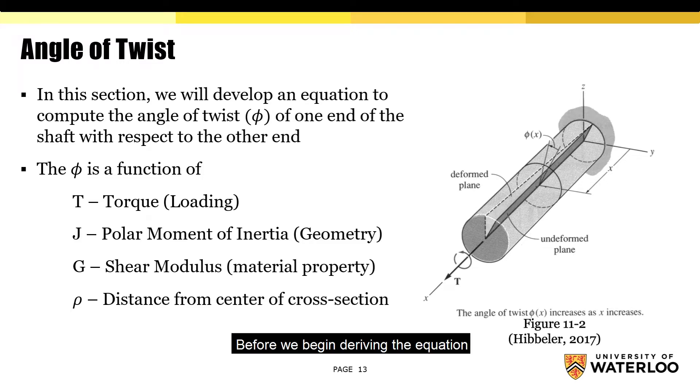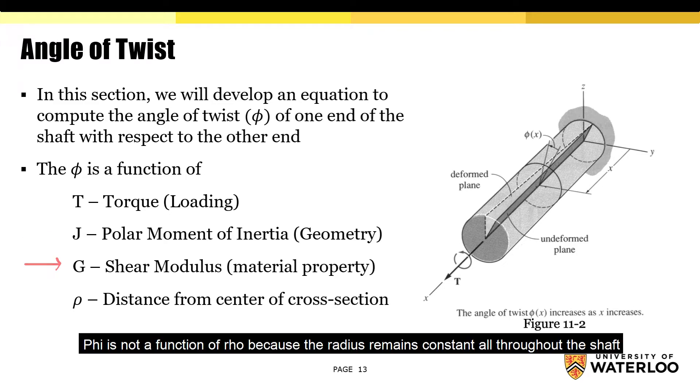Before we begin deriving the equation, note that phi is a function of torque, the polar moment of inertia, and the shear modulus of elasticity. Phi is not a function of rho because the radius remains constant throughout the shaft.